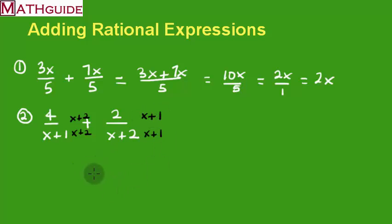How does this give us a common denominator? Our denominator here will be x plus 1 times x plus 2. Our denominator here will also be x plus 1 times x plus 2. Therefore, they'll have the same denominator.